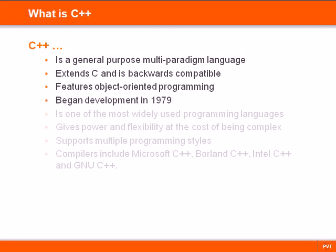The development of C++ started in 1979, seven years after C first made its appearance. Despite being what many consider legacy languages, C and C++ are still the most widely used languages in the software industry. They're used in creating everything from operating systems and embedded software to desktop applications, games and so on.